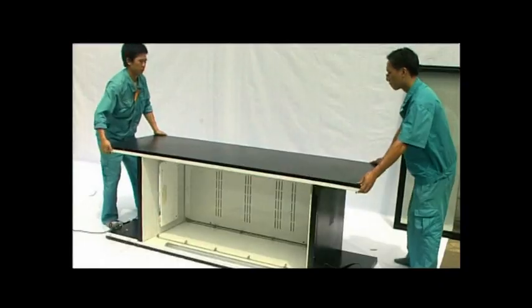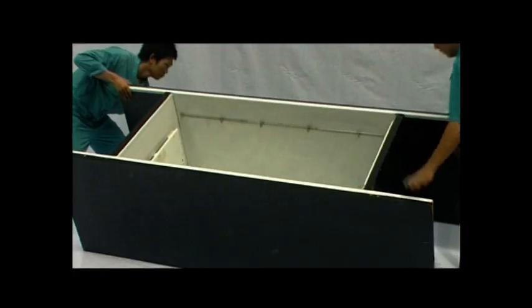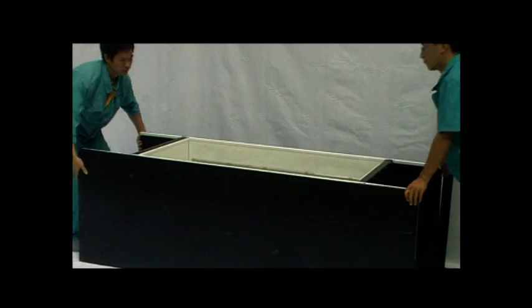Step 5: Overturn the assembled part by 90 degrees with the front face upward and then install the up hinge.